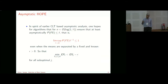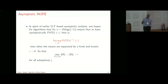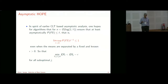Asymptotic hopes: one hopes for algorithms that take order log(1/delta) samples and ensure that probability of false selection is less than delta at least asymptotically — meaning probability of false selection divided by delta is less than or equal to 1 as delta goes to 0. This holds even when the means are separated by epsilon, with epsilon fixed.